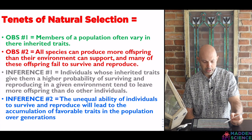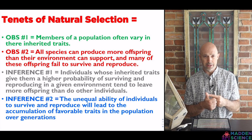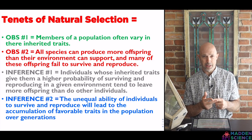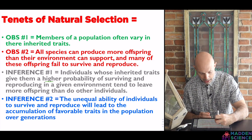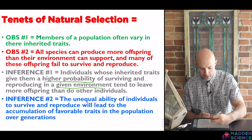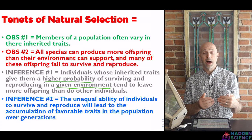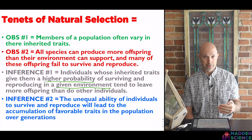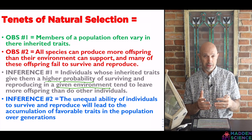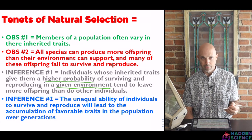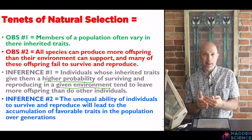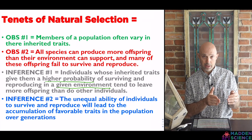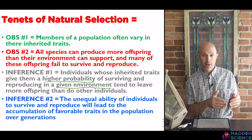Observation two: all species can produce more offspring than their environment can support, and many of those offspring fail to survive and reproduce. Because of that, individuals whose inherited traits give them a higher probability of surviving and reproducing in a given environment tend to leave more offspring than other individuals. Key points: higher probability — so there's no guarantee — just a slightly higher percentage. And "given environment" — it's not that there's one definition of most fit, but rather it's the organisms most adaptable to their given environment. Inference two: this unequal ability of individuals to survive and reproduce will lead to the accumulation of favorable traits in that population over generations.